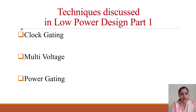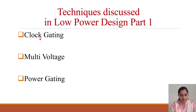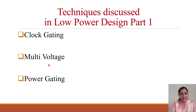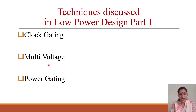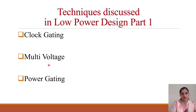In case of clock gating, the clock is given to a particular part only when it is required. For multi-voltage, as per the requirement of the circuit on the chip, different voltages are applied to different portions of the chip — so not a single voltage is applied everywhere.